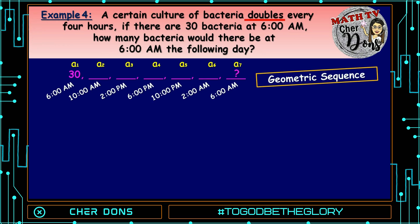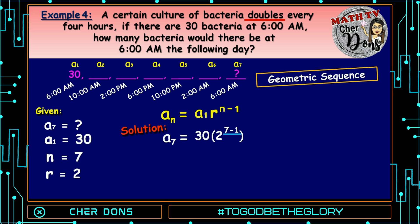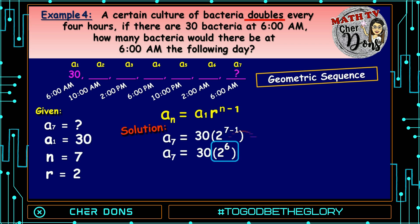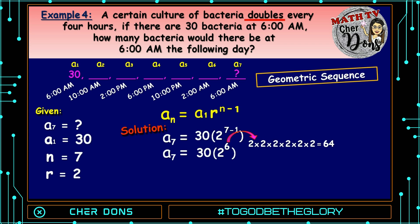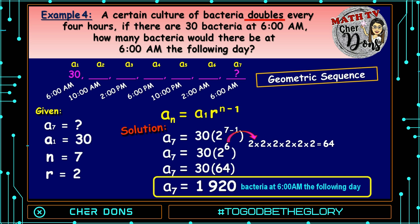We can now write the given: we're looking for A sub 7; A sub 1 is 30; n is 7; and r is 2, based on the problem. Applying the formula: A sub n is equal to A sub 1 multiplied by r raised to n minus 1. Substituting: A sub 7 equals 30 multiplied by 2 raised to 7 minus 1. 7 minus 1 equals 6, so A sub 7 equals 30 multiplied by 2 raised to 6. 2 raised to 6 equals 64, so A sub 7 equals 30 times 64, which equals 1,920. Therefore, the number of bacteria is 1,920 at 6 a.m. the following day.